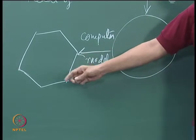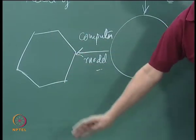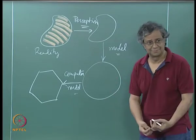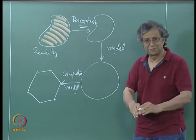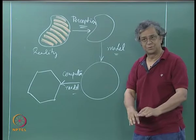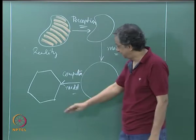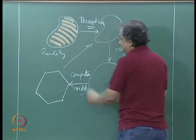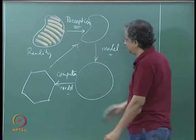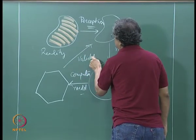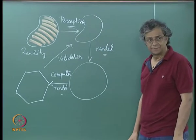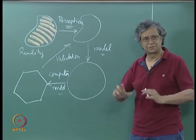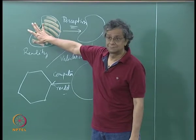There are multiple levels: there is the finite difference scheme we write down, then the actual program — the representation of the algorithm on that particular computer — and then whether that program correctly represents the algorithm you set out to implement. Verifying whether this is correct is called validation. From the mathematical model to the computer model we call it consistency. This is the big picture: reality → what we see → mathematical model → computer model.